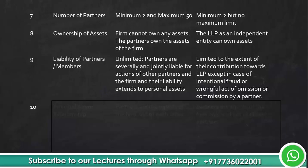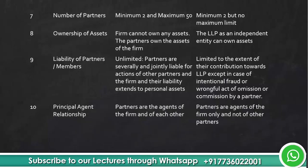The tenth difference is the principal-agent relationship. In an ordinary partnership, partners are agents of the firm and also agents of each other. Whereas in an LLP, partners are agents of the firm only — they are not agents of other partners.